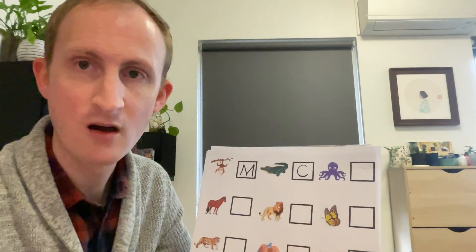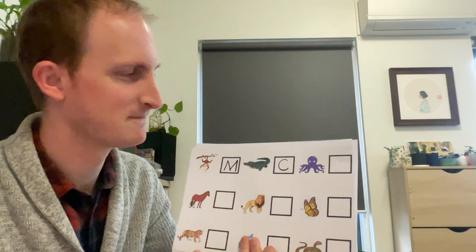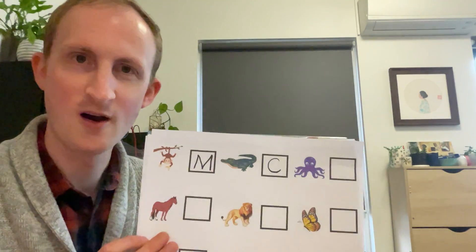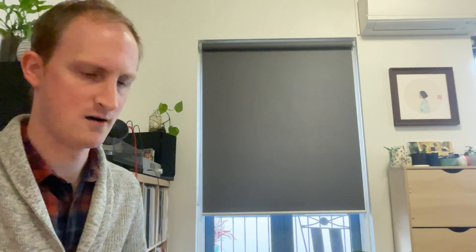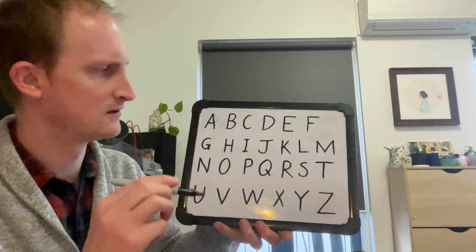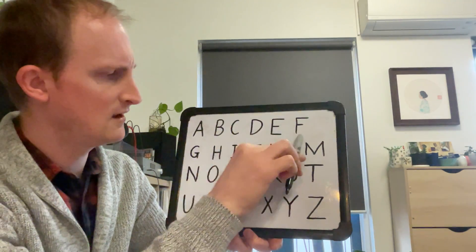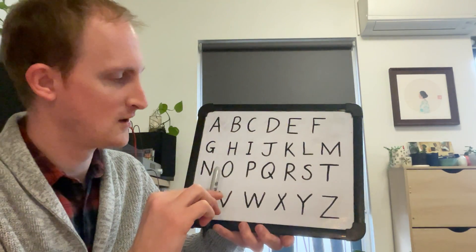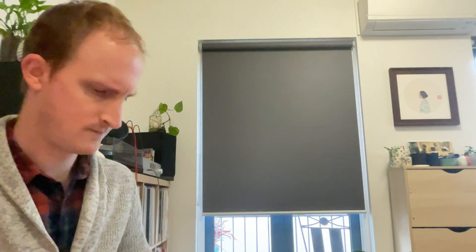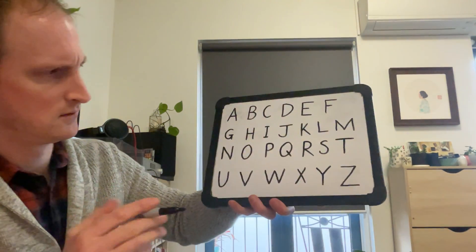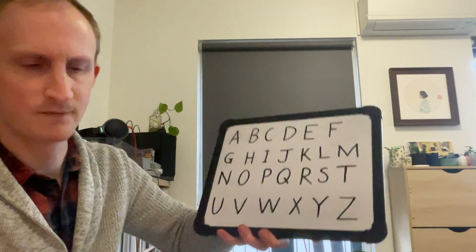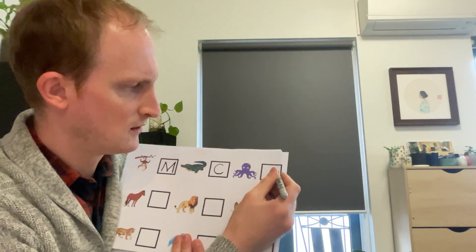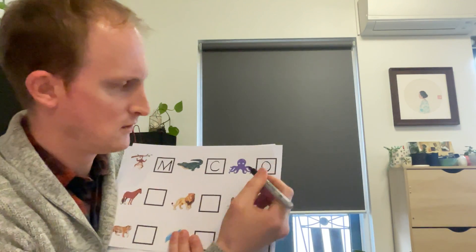Next we're doing an O. Actually, I'm not going to give it away — what animal do you think this could be? He's got lots of legs. I think he might live under the sea. It's an octopus, isn't it! Which letter makes an O sound? O makes an O sound — O, O, O, octopus. What does an O look like? A big round circle. Let's do an O for octopus — a big O. There we go.